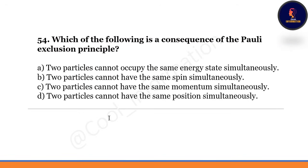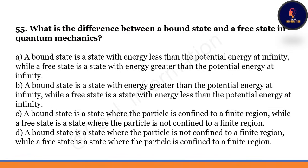Which of the following is the consequence of Pauli's exclusion principle? Correct option is B — two particles cannot have the same spin simultaneously.